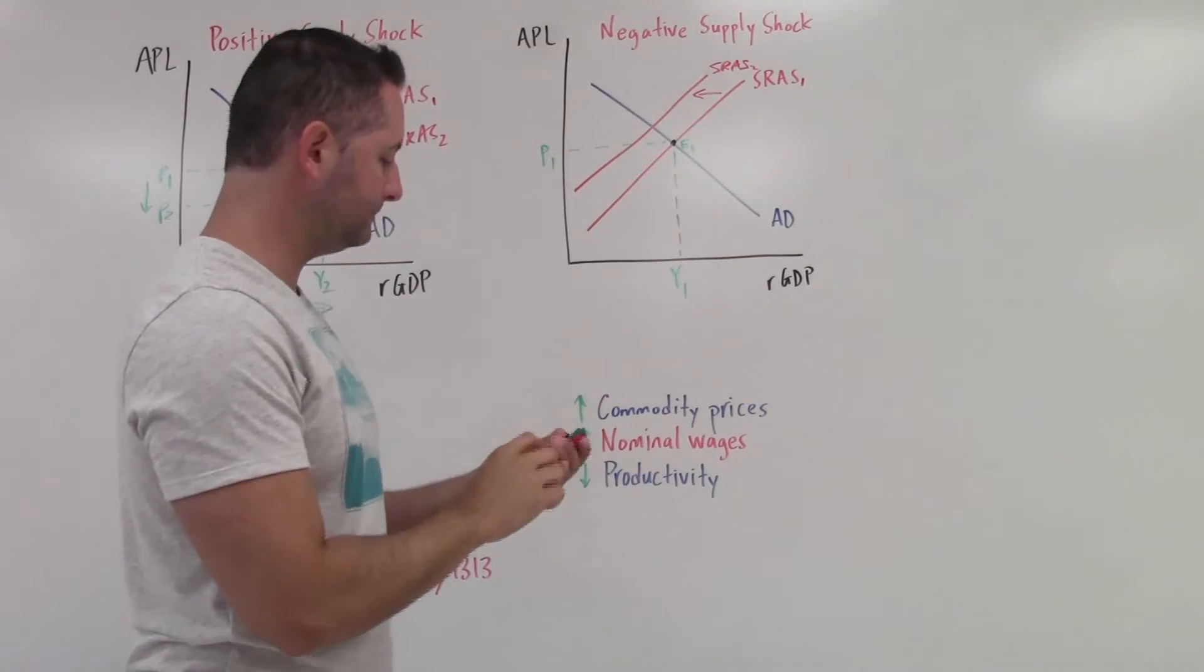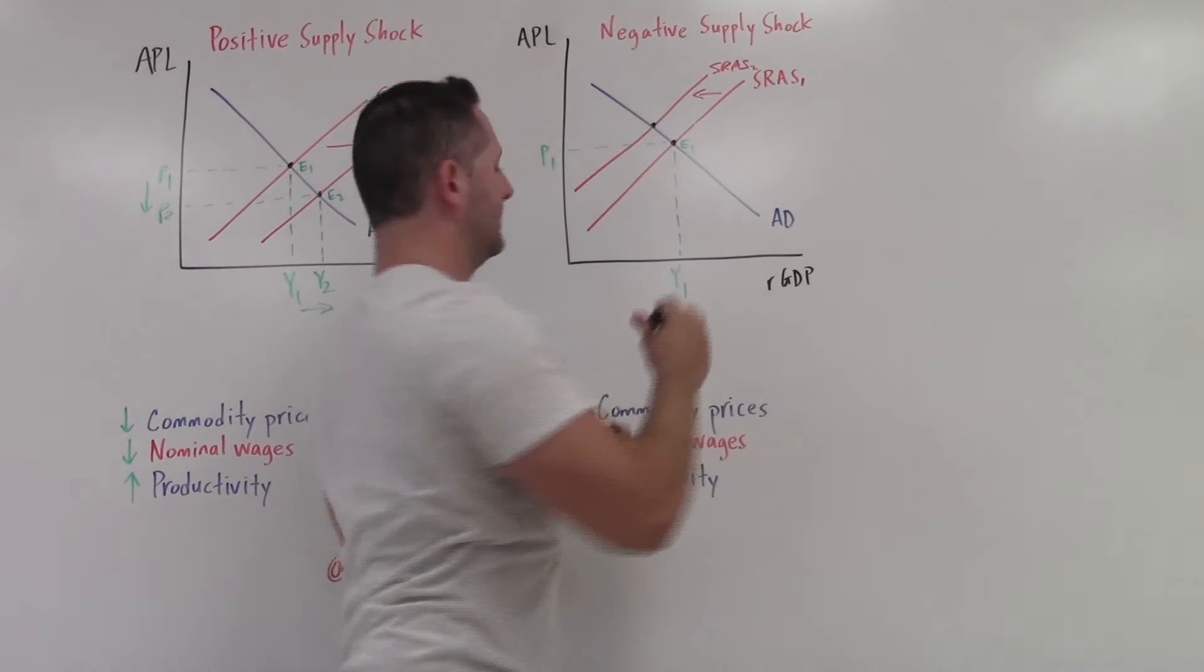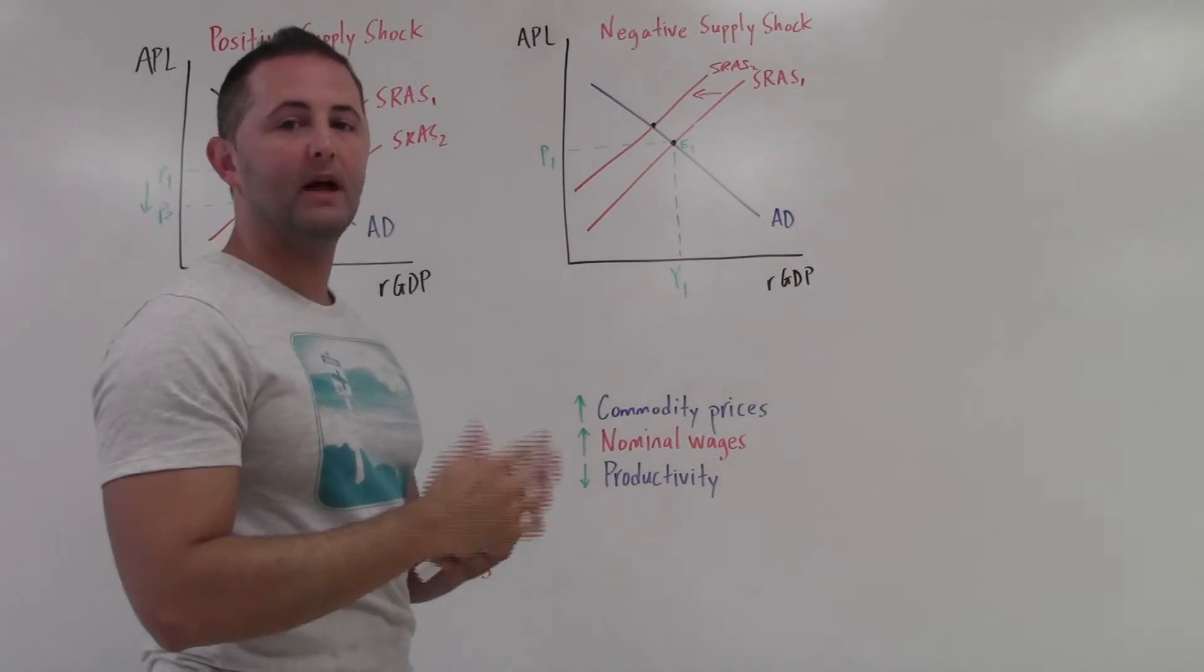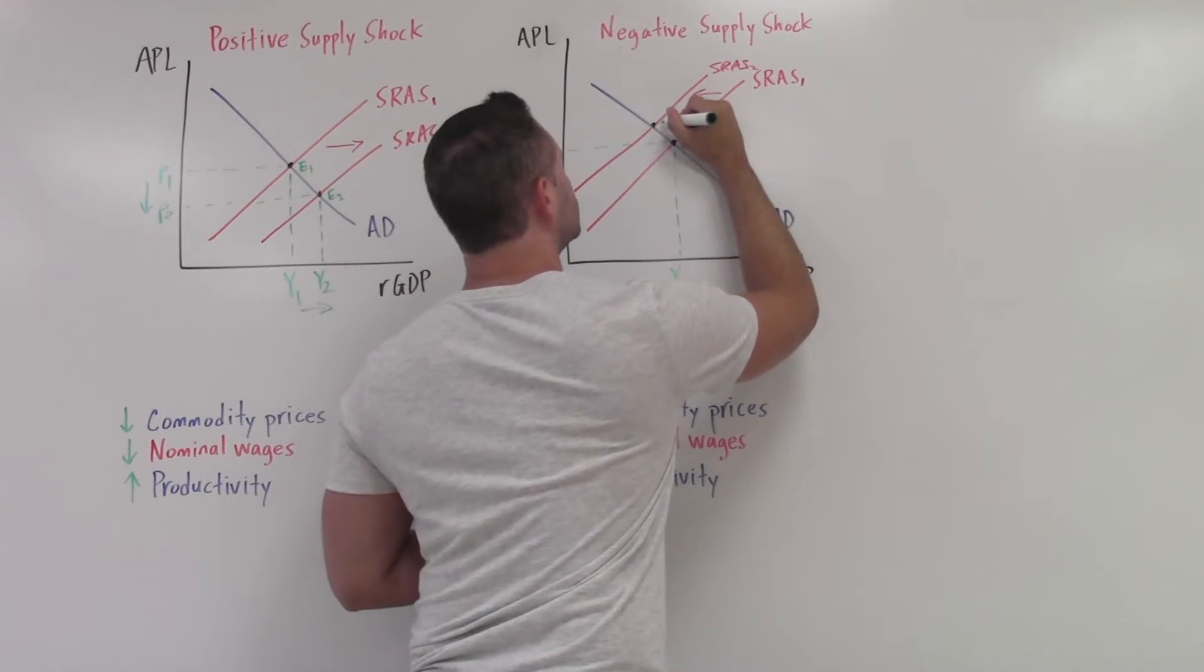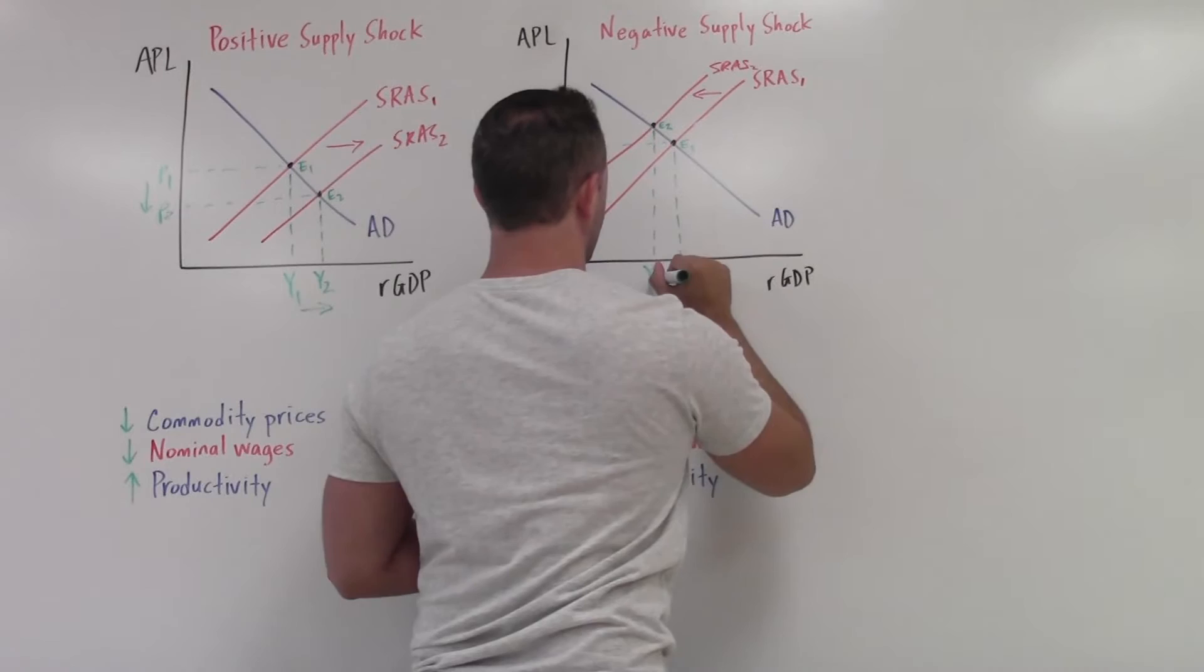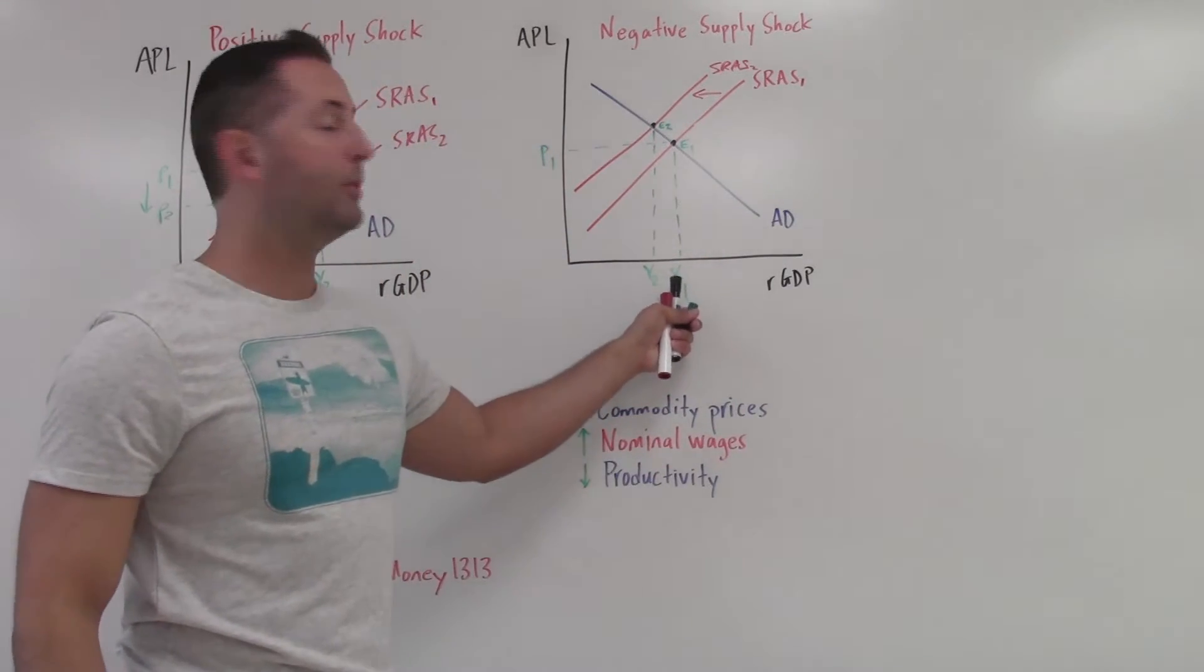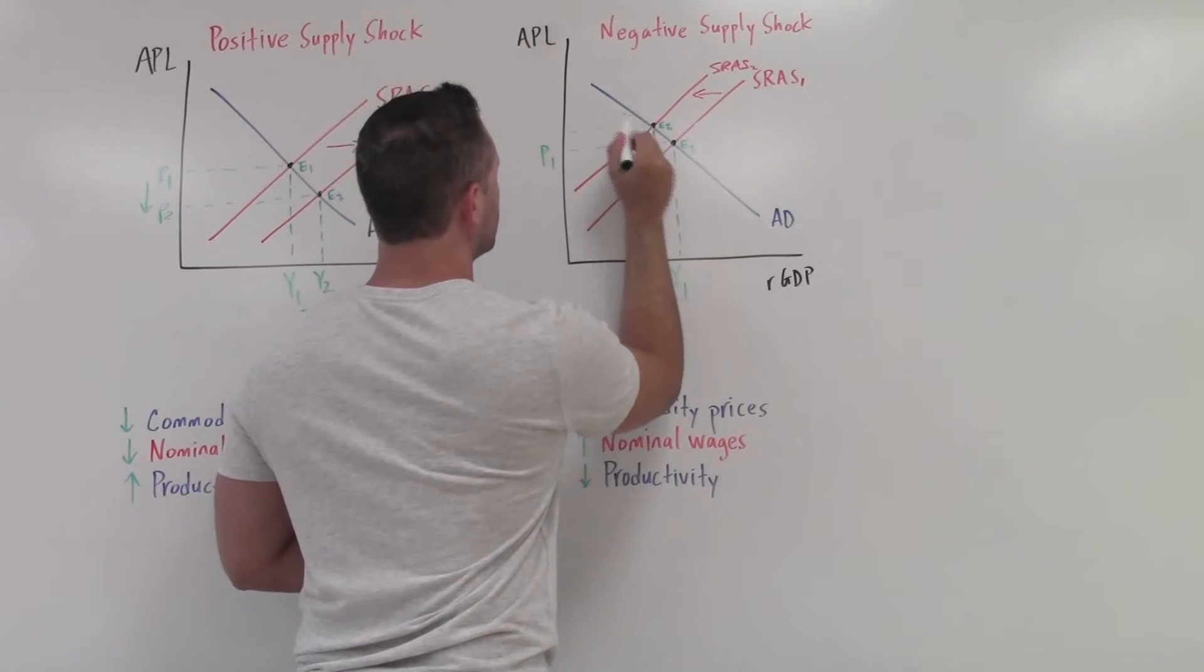And now you guys might already be sensing why this is such a negative one. So whereas the positive supply shock, we could sometimes say that might be one of the best potential outcomes for an economy. This is probably our worst scenario. Why is it so bad? Well, we just showed what happened to output. Output is falling. So we have decreasing output. So we're producing less as an economy.